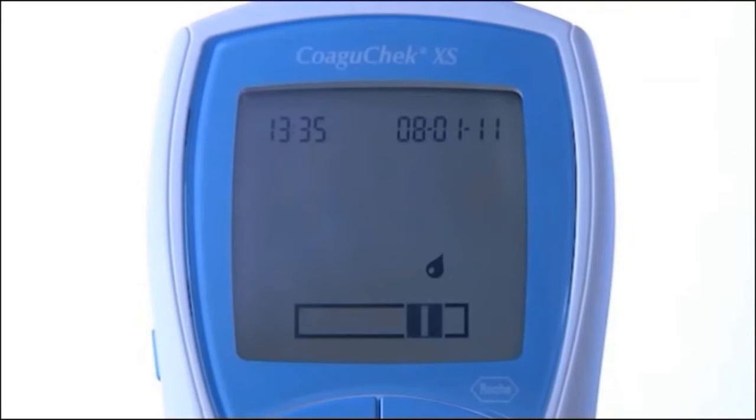At this point, the testing begins. The meter performs an automatic quality control check on the test strip and QC appears on the display. Following a successful outcome of the quality control check, a tick appears after QC and the coagulation measurement begins. The hourglass flashes until the result is displayed. It is automatically saved to memory.